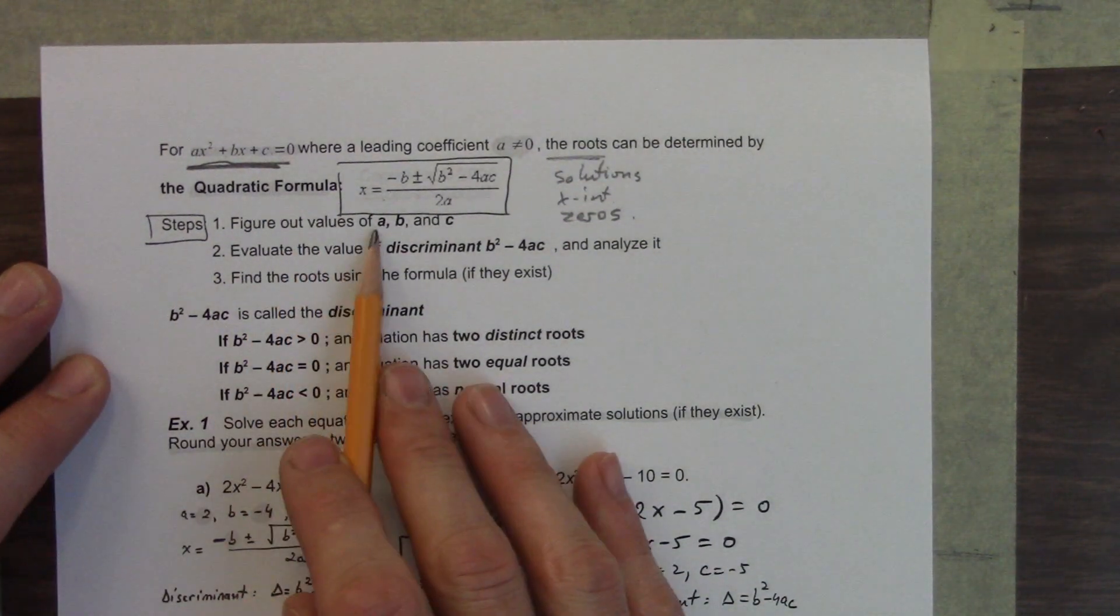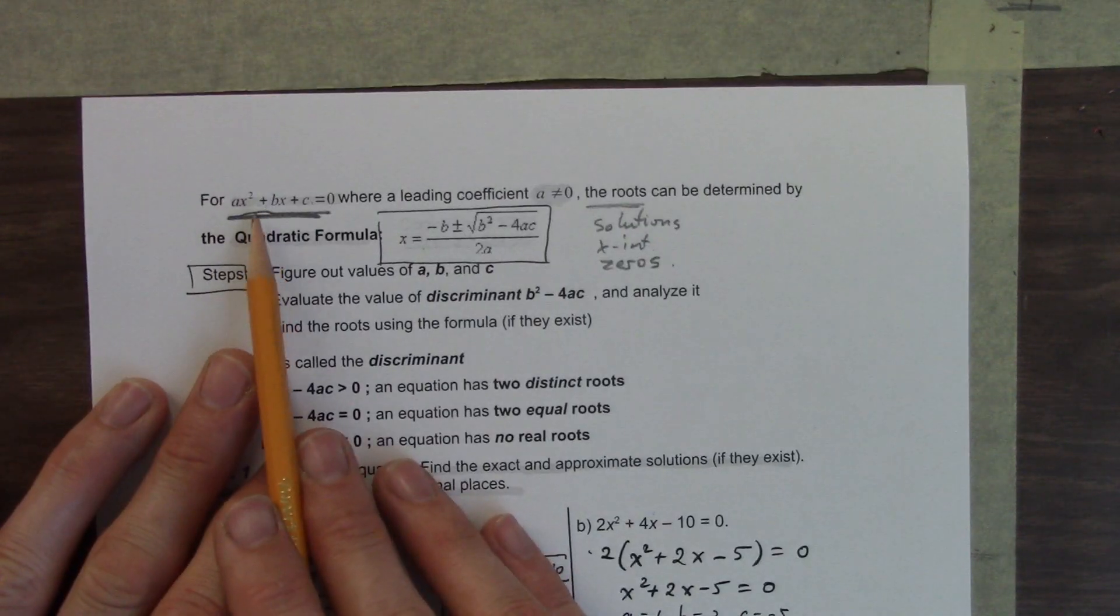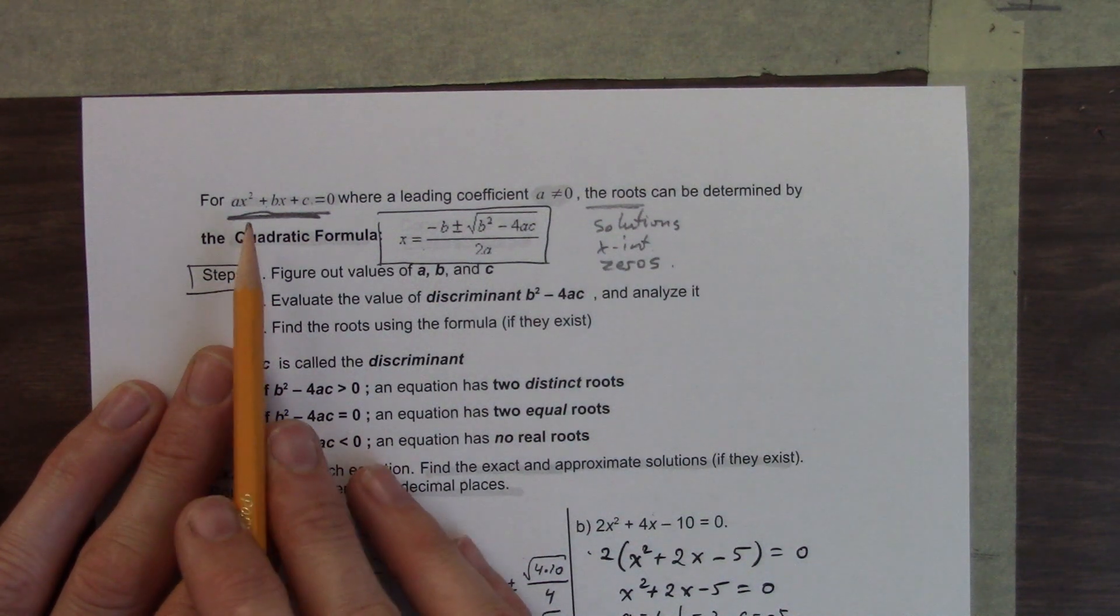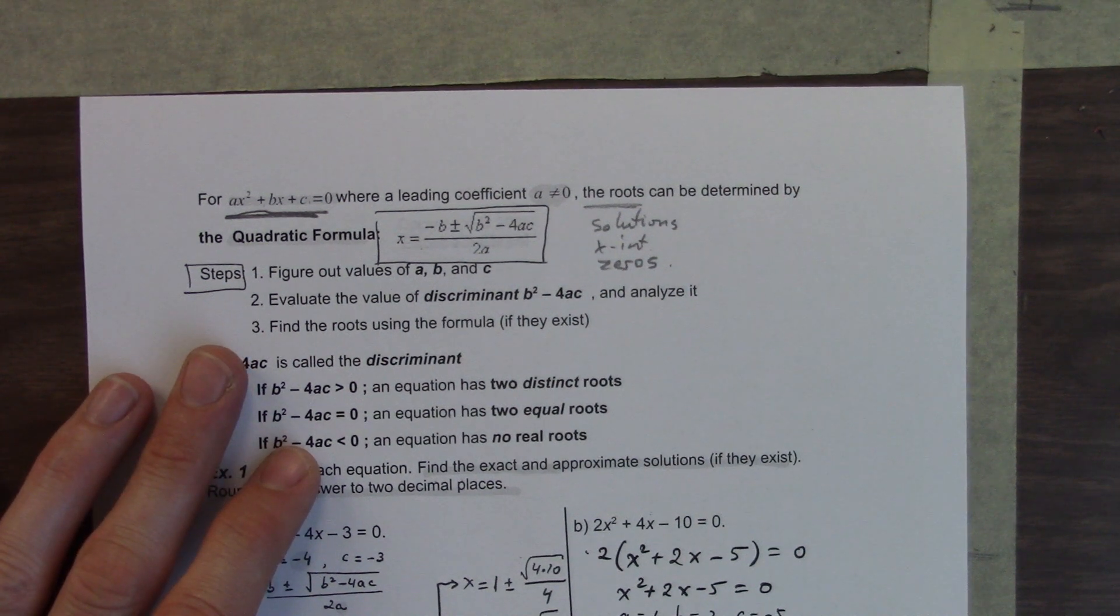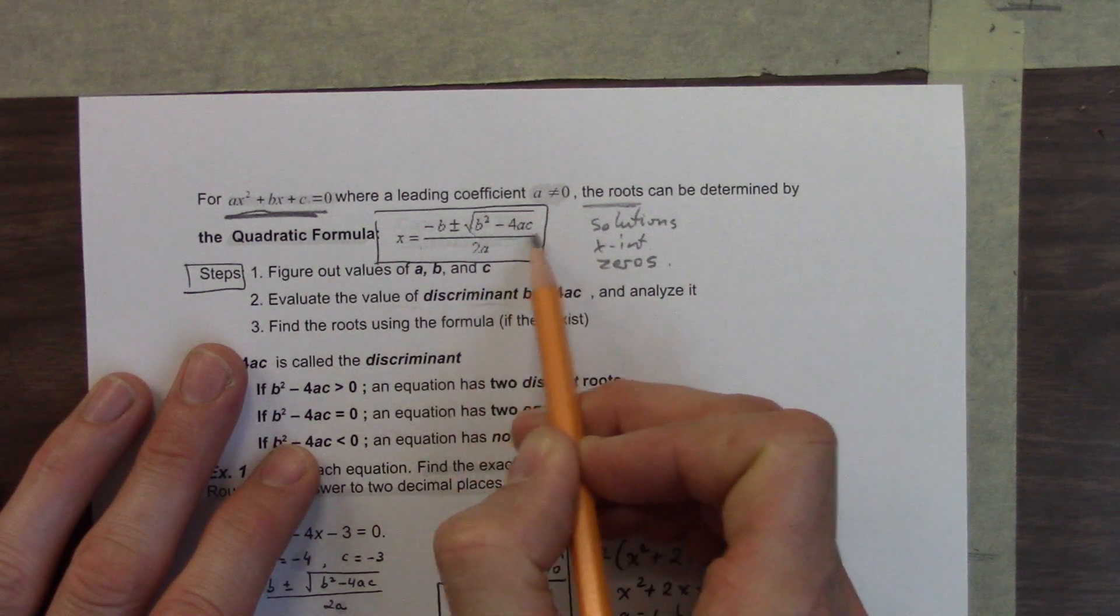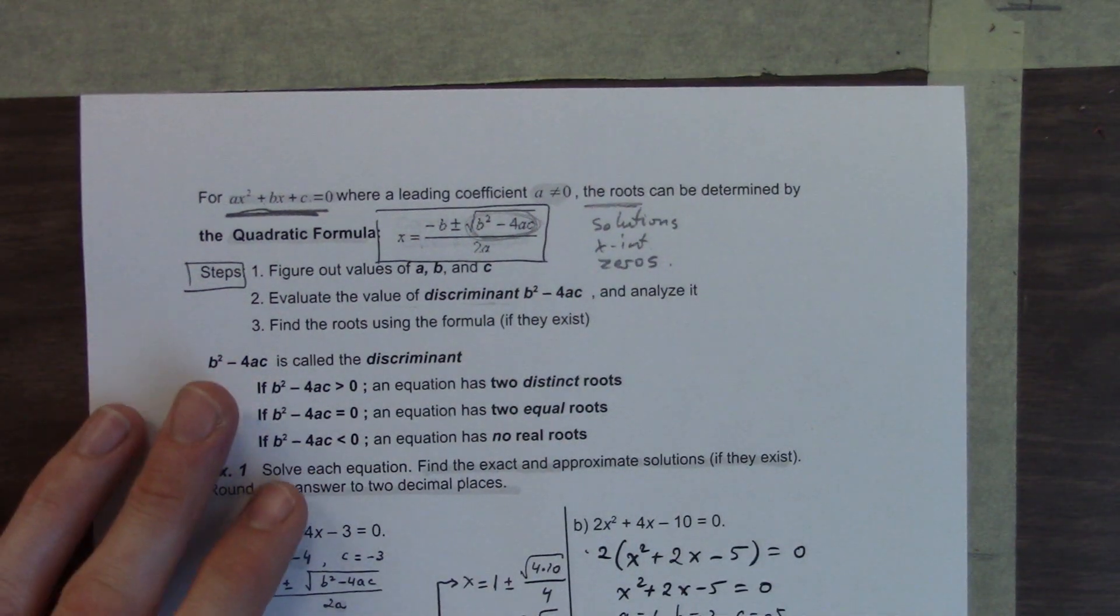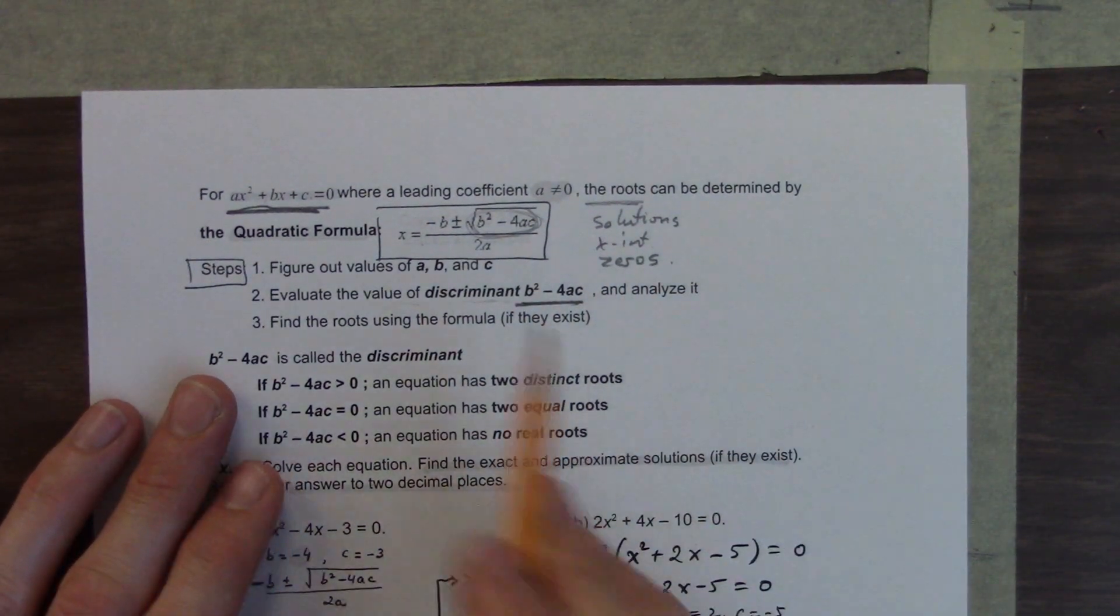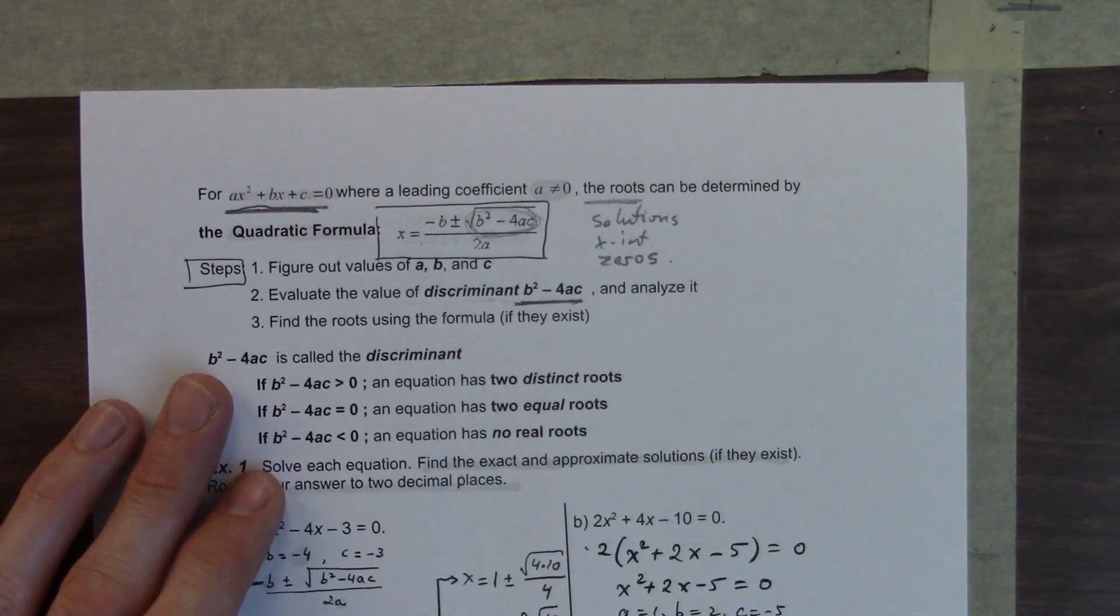So for ax squared plus bx plus c, notice how it's in complete standard form. That's our coefficients a, b, and c. We can then use this formula to find out the roots, or the solutions, or the x-intercepts, or the zeros. They call it all of these different things. So the first step, you're going to figure out what the values of a, b, and c are.